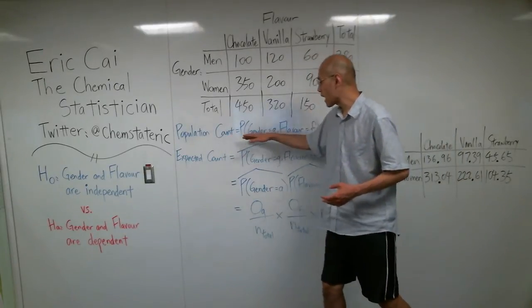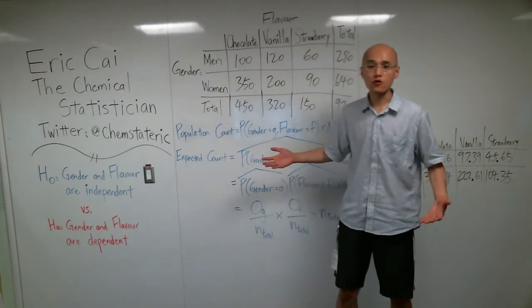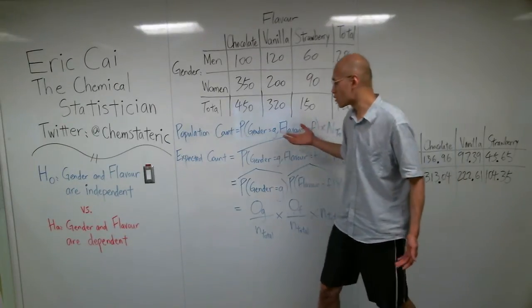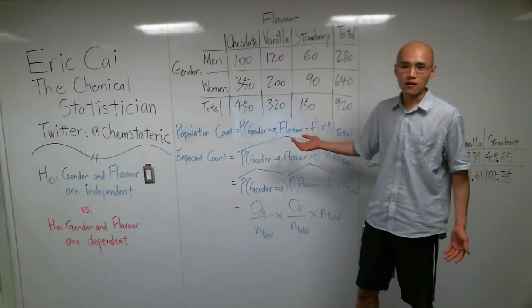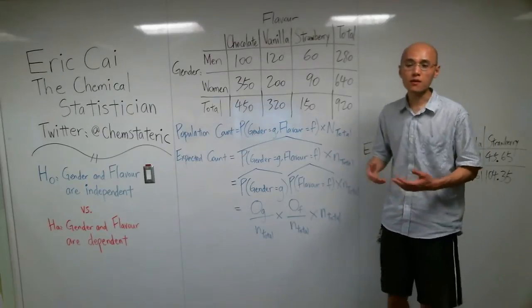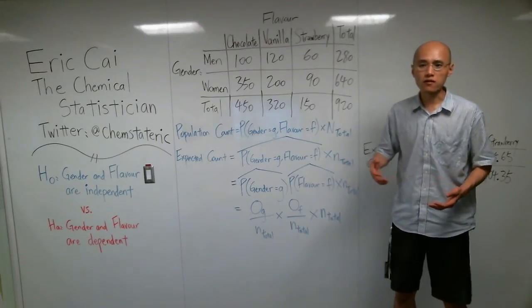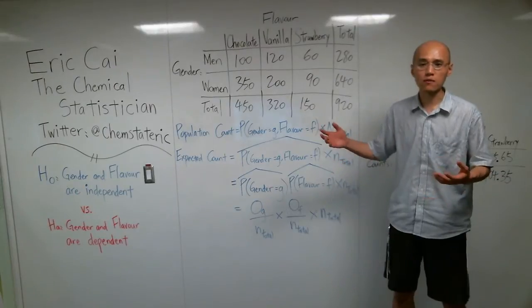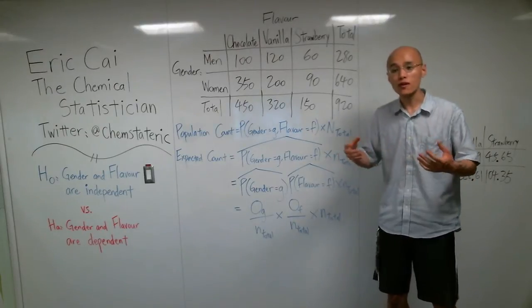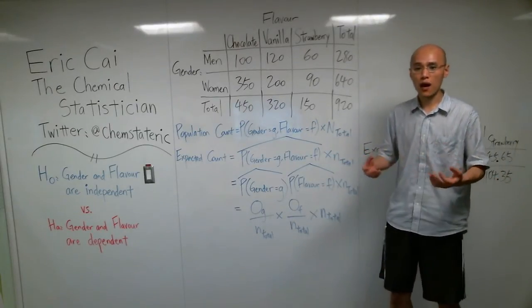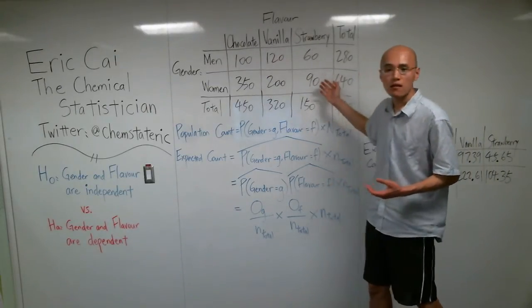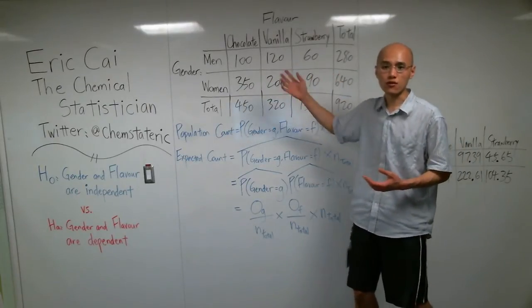But this is how you get the population count. We, of course, don't know what this true probability is. We don't know what the population count is. This here is a sample of the population. I can't possibly go around to survey all 7 billion human beings on the planet asking them what their ice cream flavors are. That's just practically impossible. So the best that I can do is take a, hopefully, representative sample of the human population. In this case, my sample is 920. And get the observed counts for their ice cream flavor preferences.